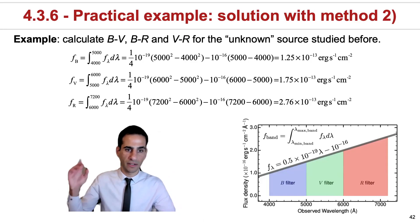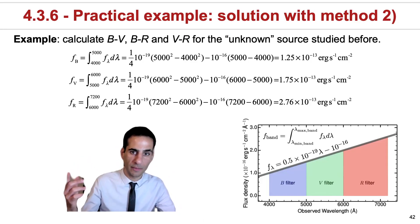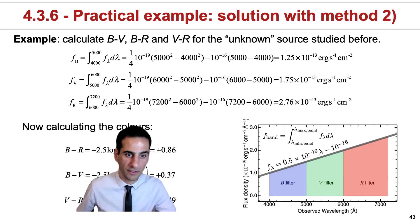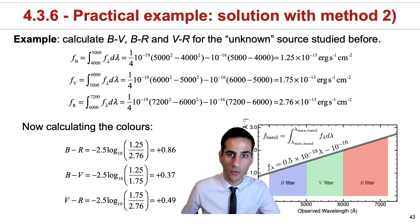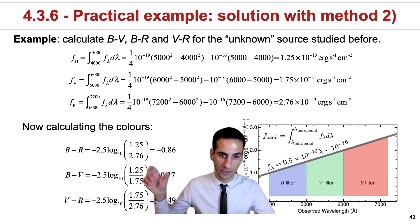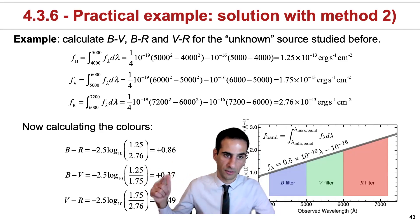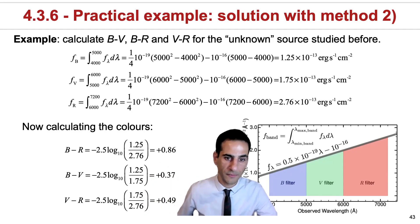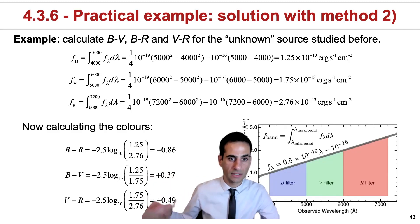if you want to calculate the fluxes of the B band, V band, and R band, these would be the answers. Once you have the fluxes, if you want to calculate the colors as ratios of the fluxes, you need to do minus 2.5 log base 10 of the ratios. You'll realize that all these colors are red, so they're all higher than zero.